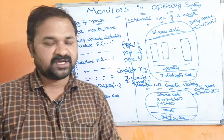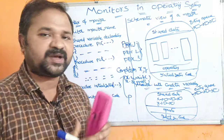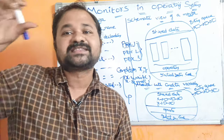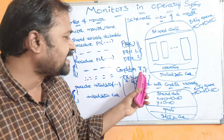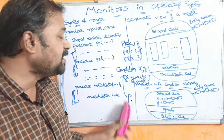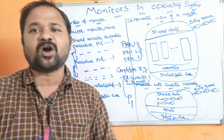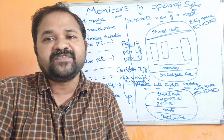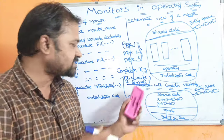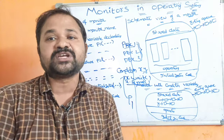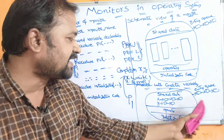Let us see what the wait operation does. Whenever a process executes x.wait, that process will be put in the suspended or waiting state. For example, if P1 executes x.wait, then P1 will be put in the waiting state. Next, whenever a process executes the signal operation x.signal, then that process's execution will be resumed.